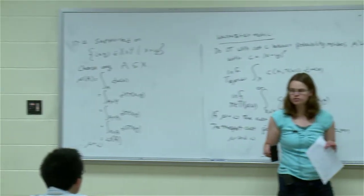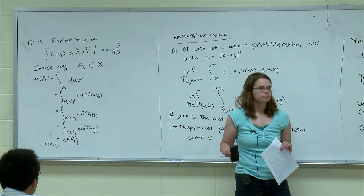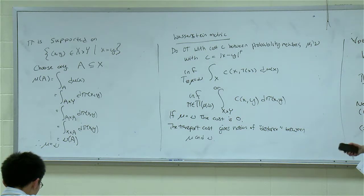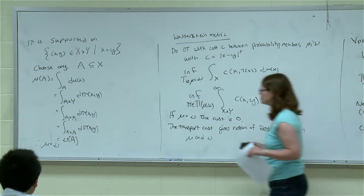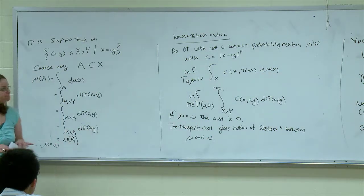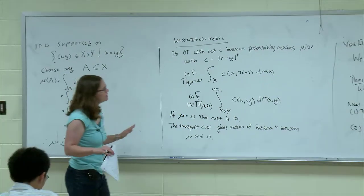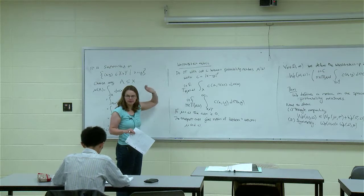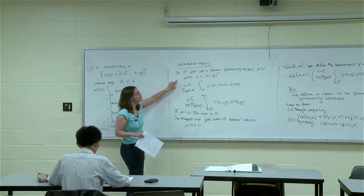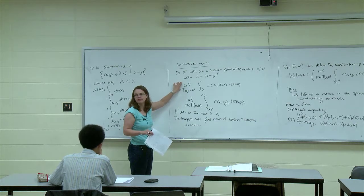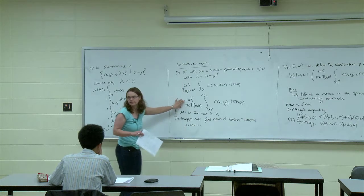We're happy with those two conditions? Then the last one is the triangle inequality. I'm going to take two passes at the triangle inequality. It's much easier to do if we happen to have transport maps, so I'm going to start by proving the triangle inequality in the setting of the Monge problem where we definitely have transport maps, and then we'll think about if we can generalize it.